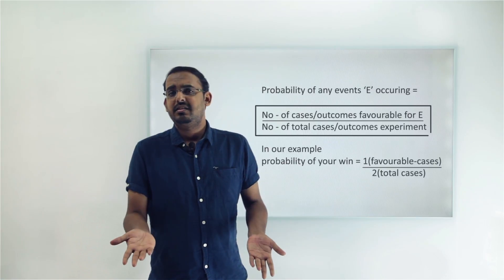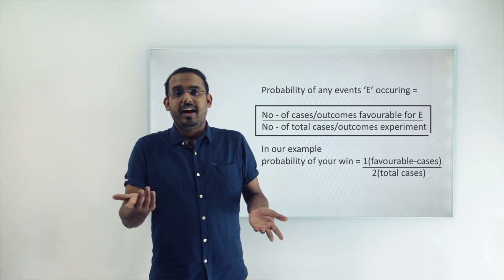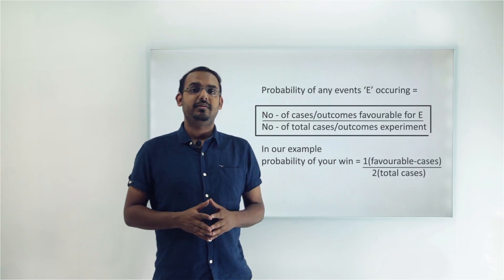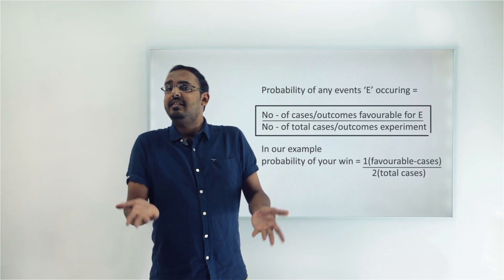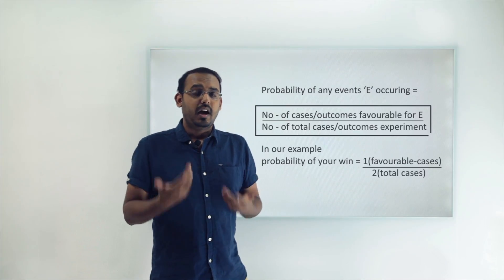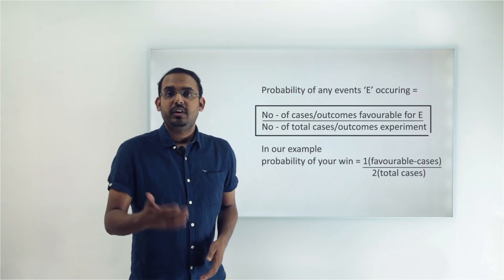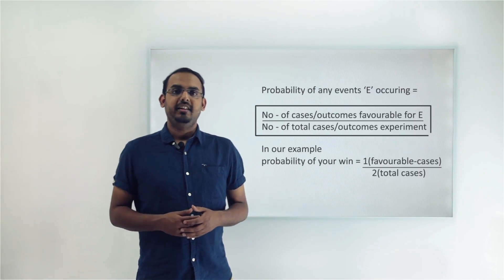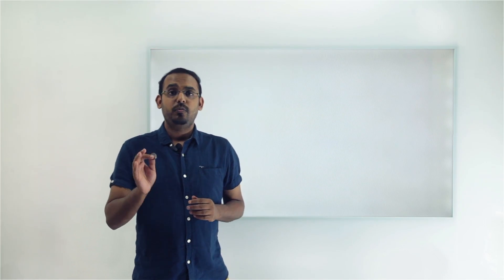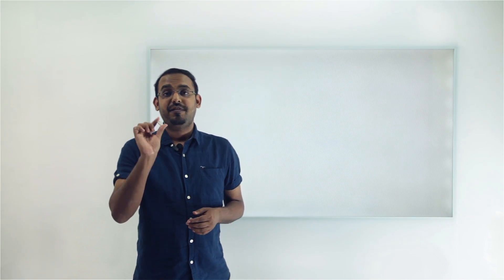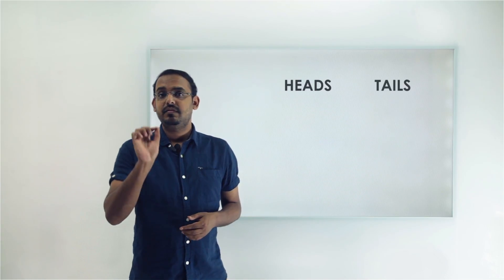But we know this doesn't always happen in real life — I for one remember losing countless coin tosses. So why does this happen when our theoretical chances are clearly 1 out of 2? To understand experimental probability, let's perform a small experiment: I'll toss a coin 10 times. By theoretical probability I should get 5 heads and 5 tails — let's see if that actually happens.